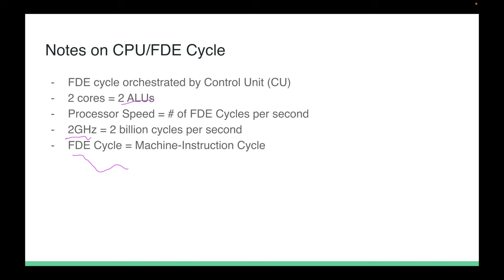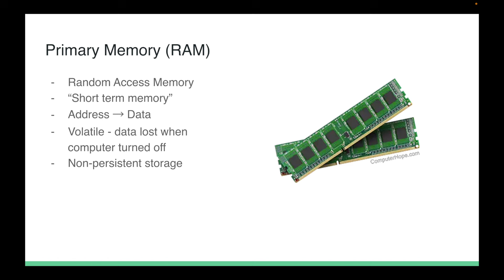Getting back to RAM: if the CPU is our brain, RAM could be considered the short-term memory — it stands for random access memory. It is volatile, meaning when the computer is turned off all data on the RAM is lost. This also means it is non-persistent storage — the data will not remain on the RAM.